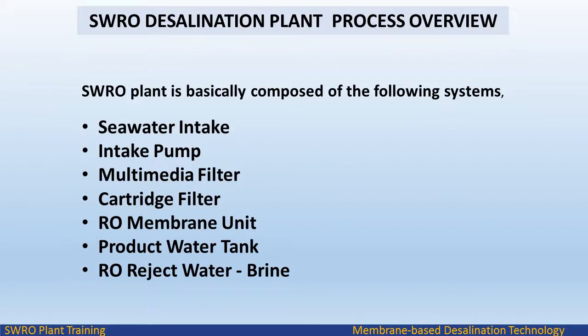A SWRO plant is basically composed of the following systems: seawater intake, intake pump, multimedia filter, cartridge filter, RO membrane unit, product water tank, RO reject water, and brine.